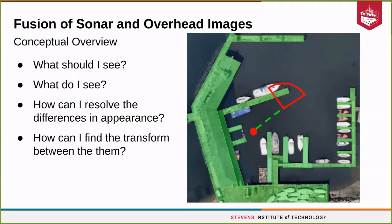Conceptually, if we start at the red dot and move along some trajectory to our current state, and we overlay our sensor footprint on the green segmentation, we can ask: what should I see? We can compare that to what we do see in our real sonar image, and then we can resolve the differences in appearance and find the transformation between them.